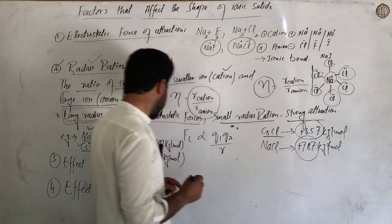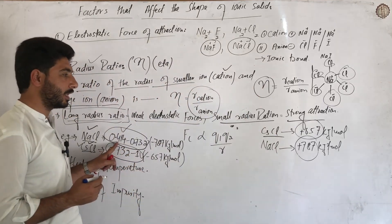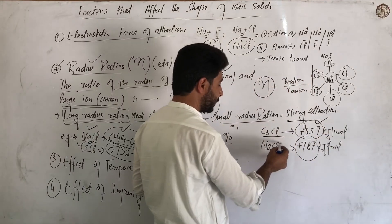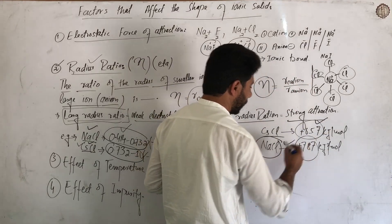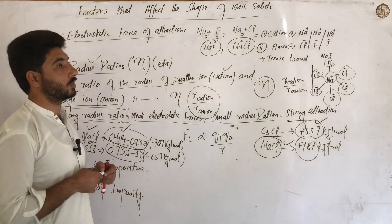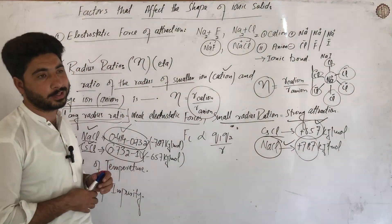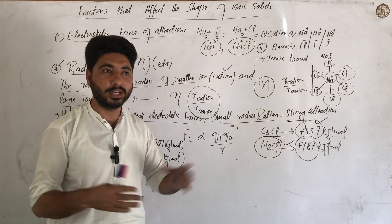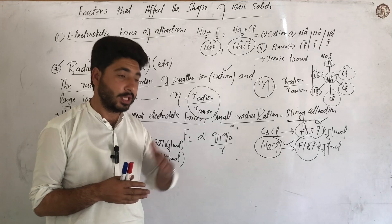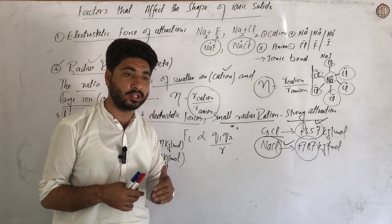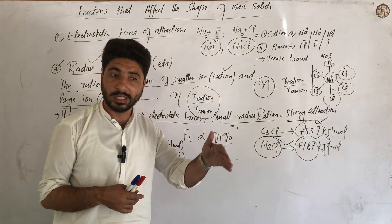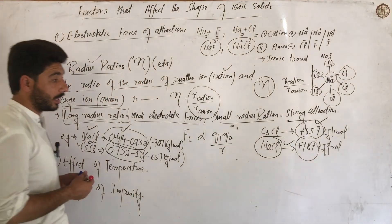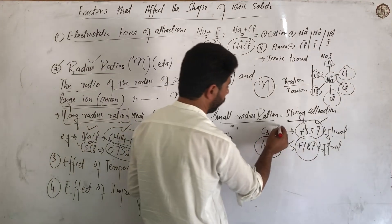So the radius ratio of the whole determines the electrostatic force. When the radius ratio is small, the electrostatic force is strong. When the electrostatic force is strong, the arrangement of ions changes - the structure and shape of the ionic solid changes accordingly. The arrangement and attraction determine the final shape.